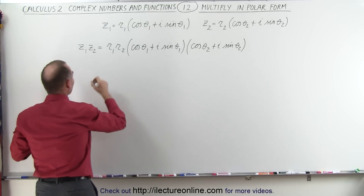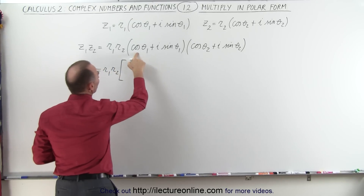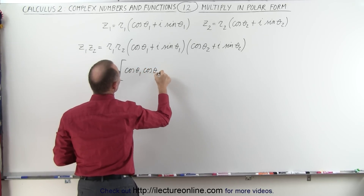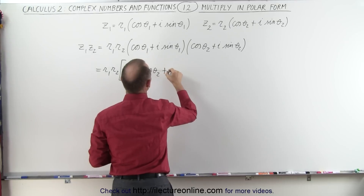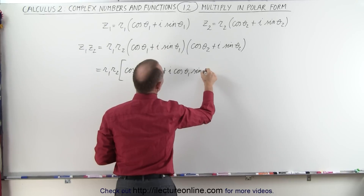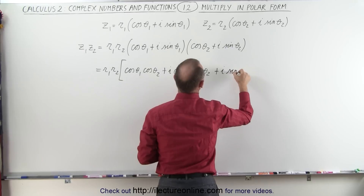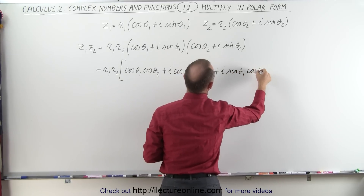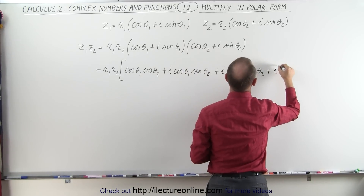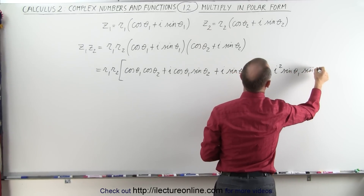Let's see what we get. This becomes r1 times r2 times: cosine of theta1 times the cosine of theta2, plus i times the cosine of theta1 times the sine of theta2, plus i times the sine of theta1 times the cosine of theta2, plus i squared times the sine of theta1 times the sine of theta2.